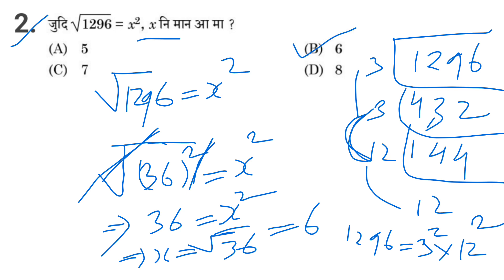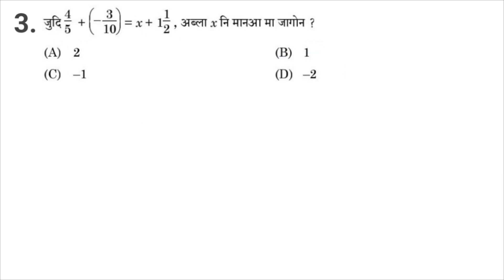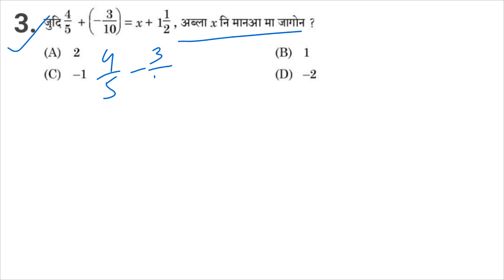Option number B: this is the number of times. 4 by 5 plus bracket minus 3 by 10 bracket close equals X plus 1, 1 by 2. 5 times equal to 1, 1 by 5. 40 plus minus 5. 3 by 10 putting equal: X squared in it plus 1, 1 by 2.